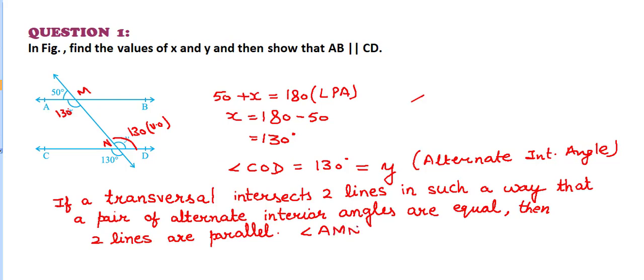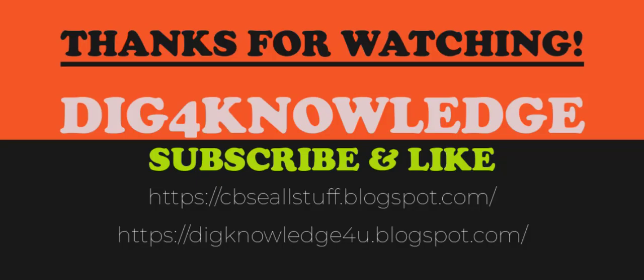Angle AMN and angle MND are equal. These two are alternate interior angles. Since these two alternate interior angles are equal, both having values of 130 degrees, therefore the lines are parallel. So AB is parallel to CD.